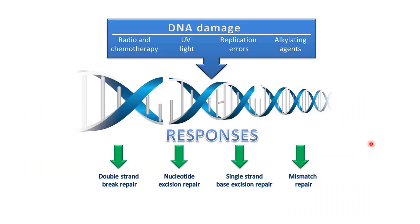This picture shows the types of DNA damage and types of DNA repair mechanisms. DNA damage caused by radio and chemotherapy is corrected by double strand break repair. Damage caused by ultraviolet light is corrected by nucleotide excision repair. Damage caused by replication errors is corrected by single strand base excision repair. Damage by alkylating agents is corrected by mismatch repair. This slide is very important because many multiple choice questions are asked from it.